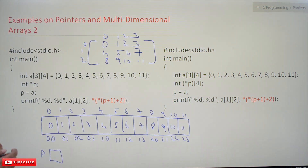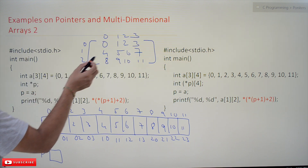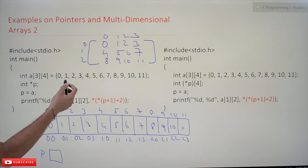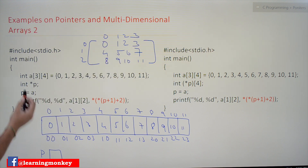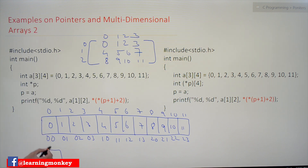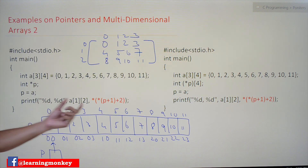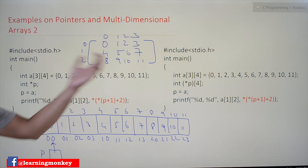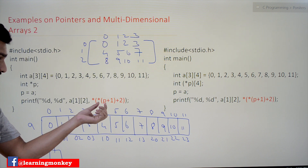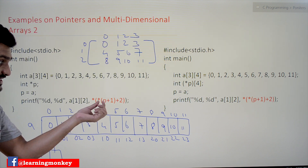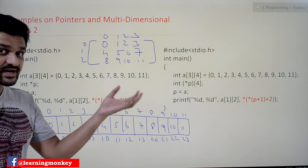Now coming to this class: here we have created a two-dimensional array, and we have also created a pointer P. This pointer P is assigned to the array. So instead of 'a' as we used in the previous example, we have taken this as P. The question is: are we going to get the right answer?